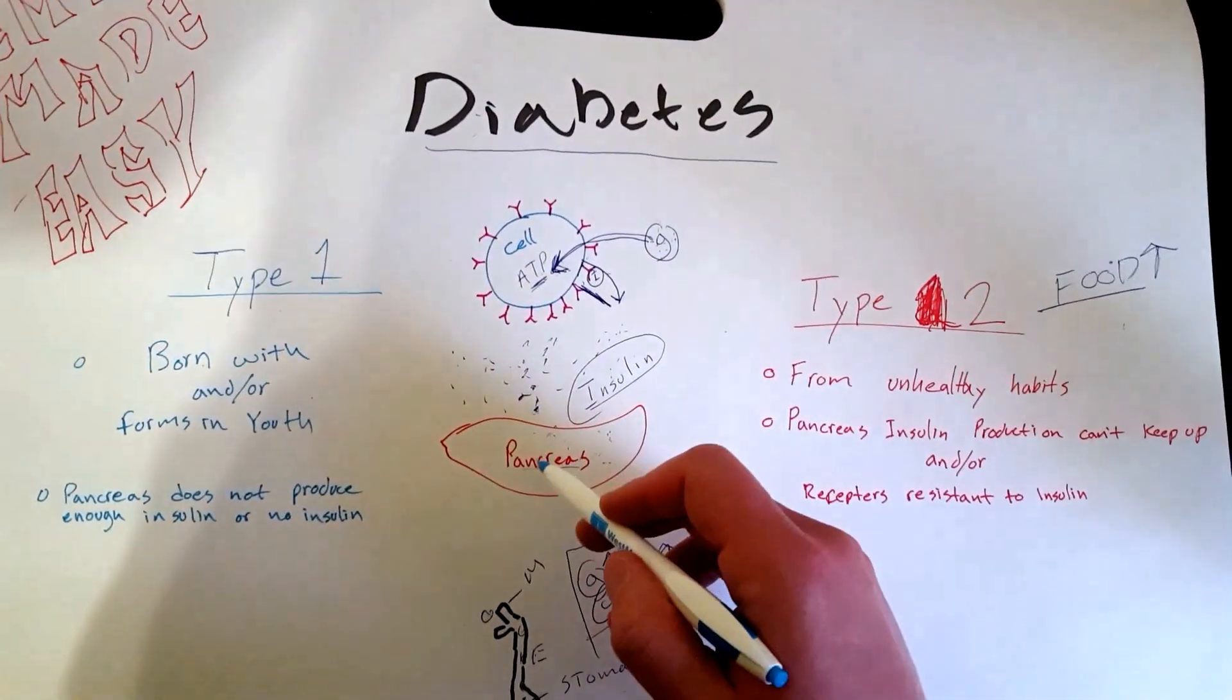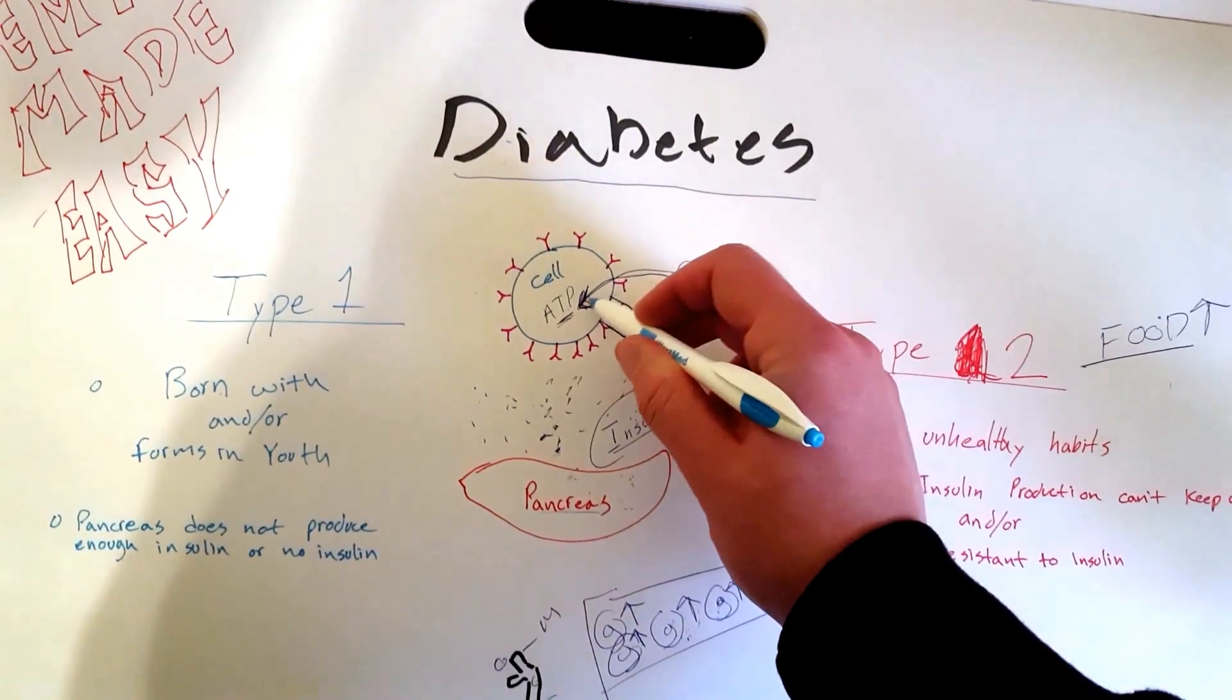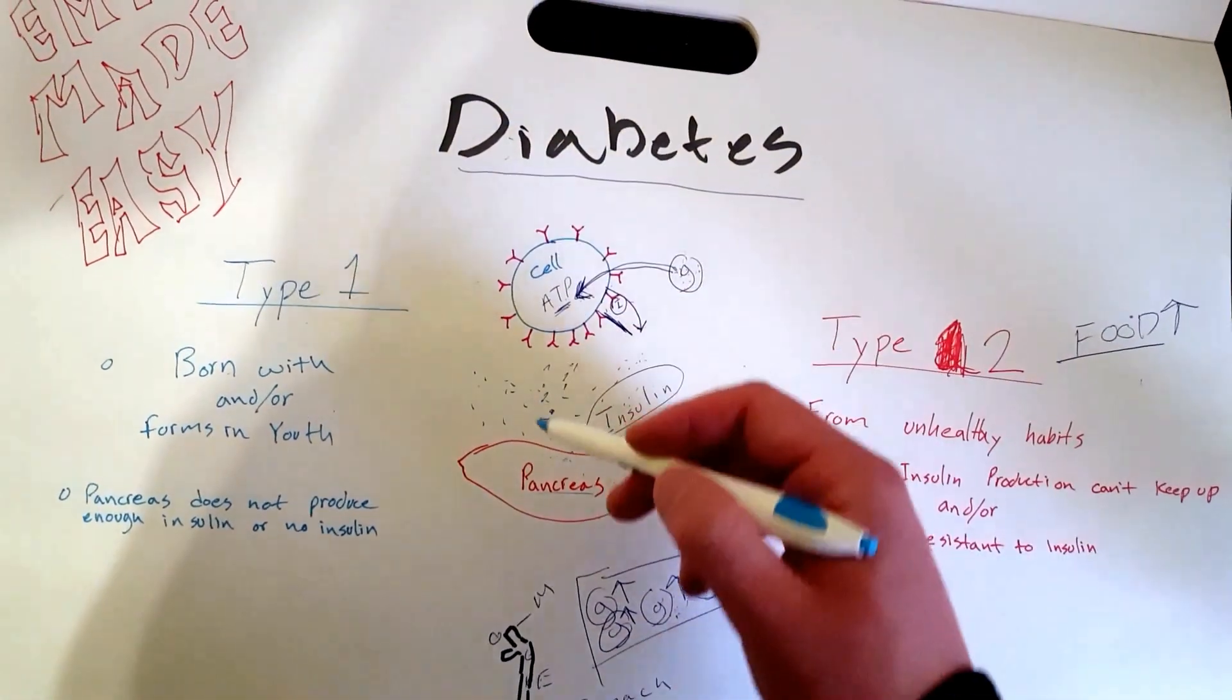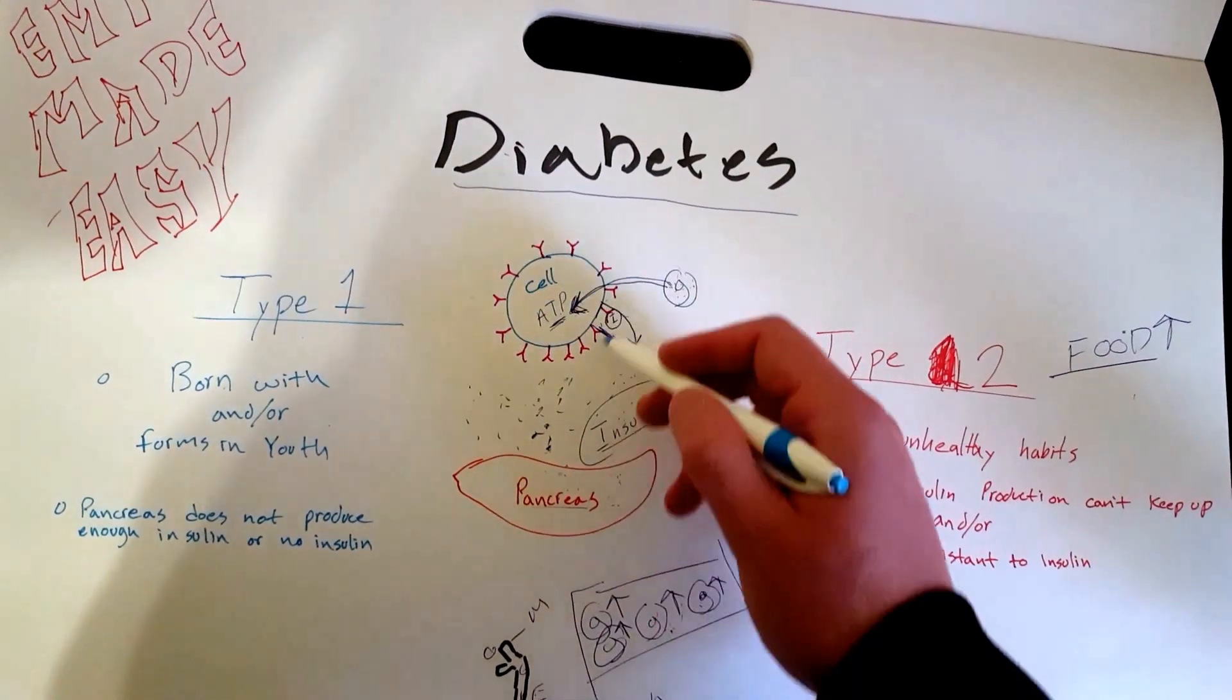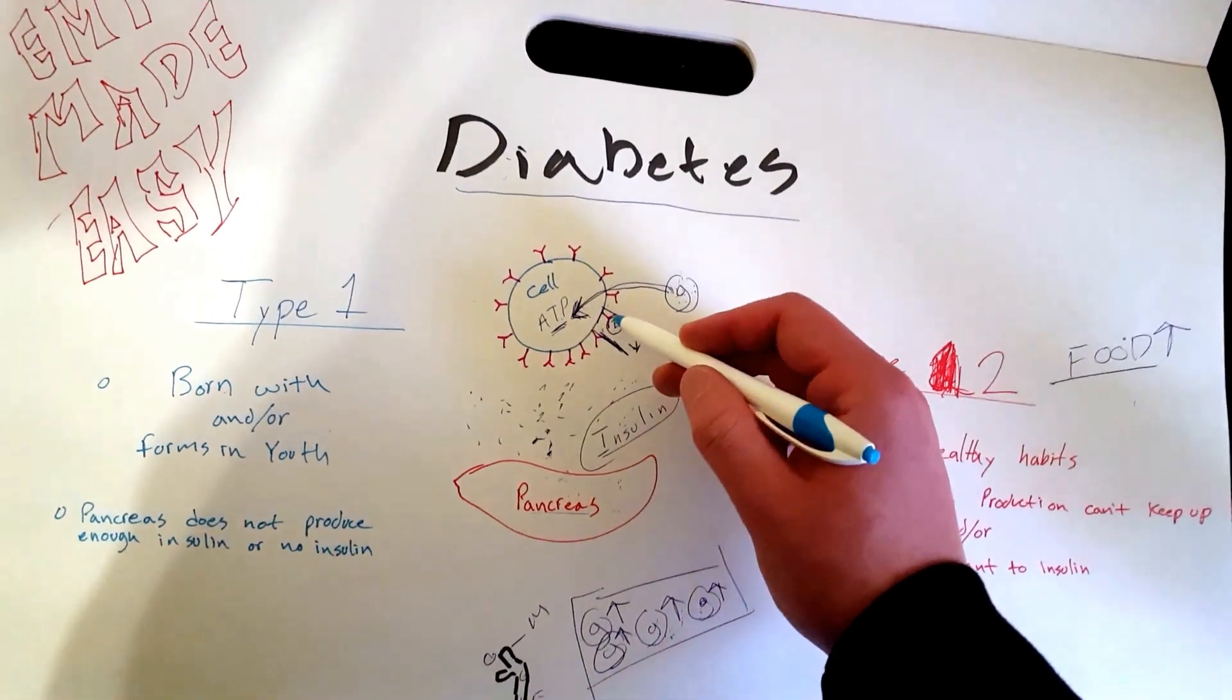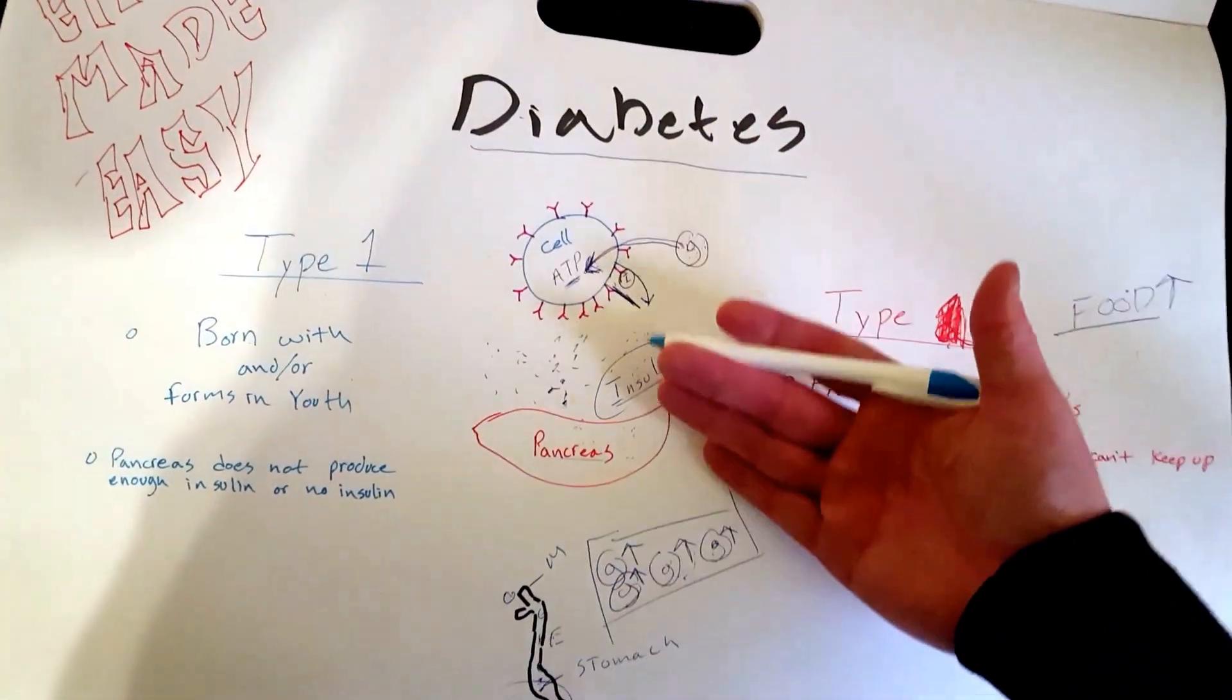Glucose needs to get into the cell to create energy and keep you alive. When glucose increases in your blood, the pancreas activates insulin because glucose cannot get into the cell by itself. It needs insulin, which is like a doorman with a special key that opens the door, lets glucose in the cell, and then energy is created.